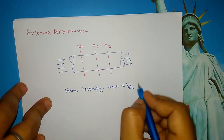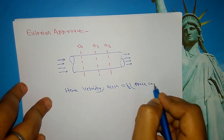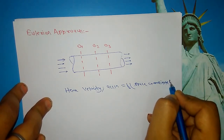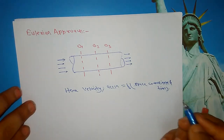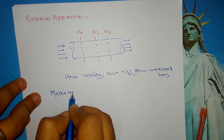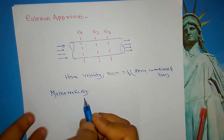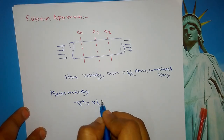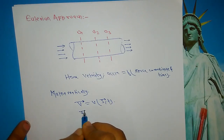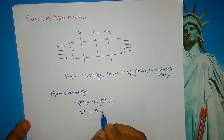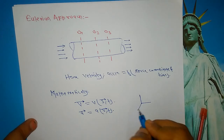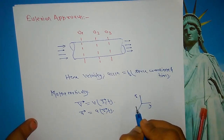Velocity or acceleration is a function of space coordinates and time. If we want to represent it mathematically: the velocity vector is a function of space coordinates and time, and similarly the acceleration vector is a function of space coordinates and time. As we have seen in the Lagrangian case with coordinates x, y, and z.